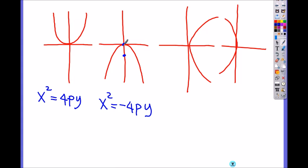If it opens right and left, you start off of y squared equals 4p, the other variable which is x. Left, it is y squared equals negative 4px.